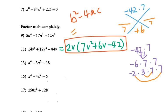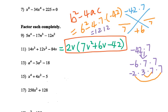Another way to check is using the discriminant b squared minus 4ac. You get 6 squared minus 4 times 7 times negative 42, and the result is 1212 — it's not a perfect square number. That's why this is the final answer: you cannot factor that quadratic function.